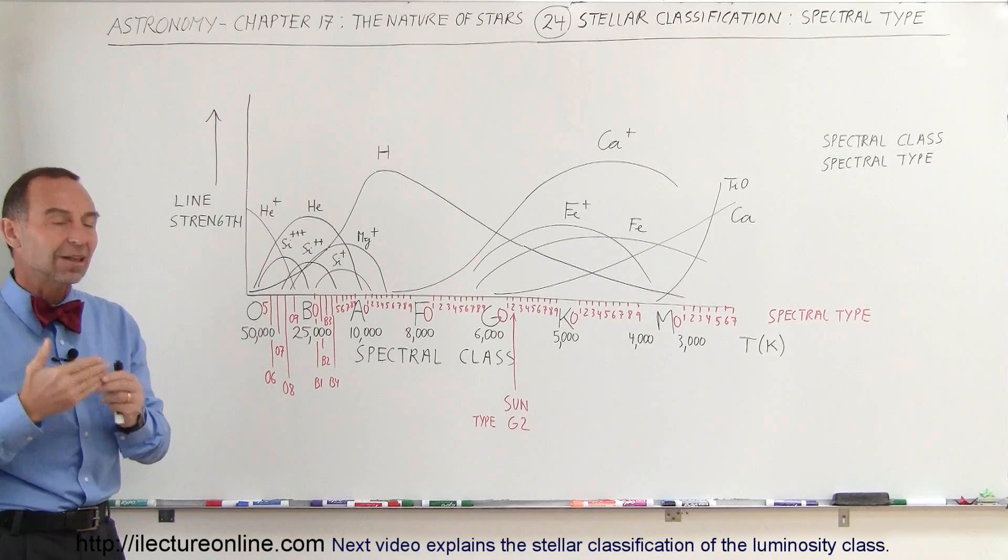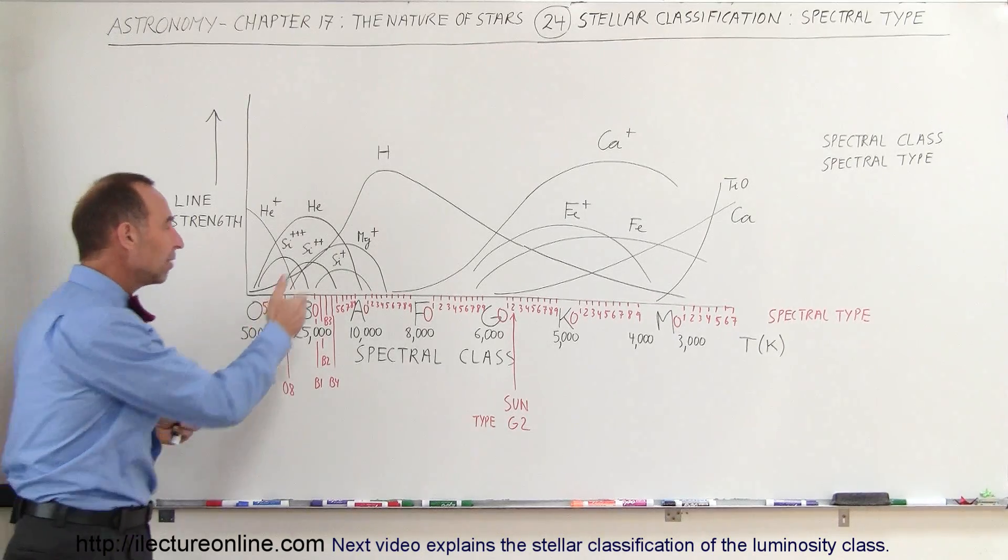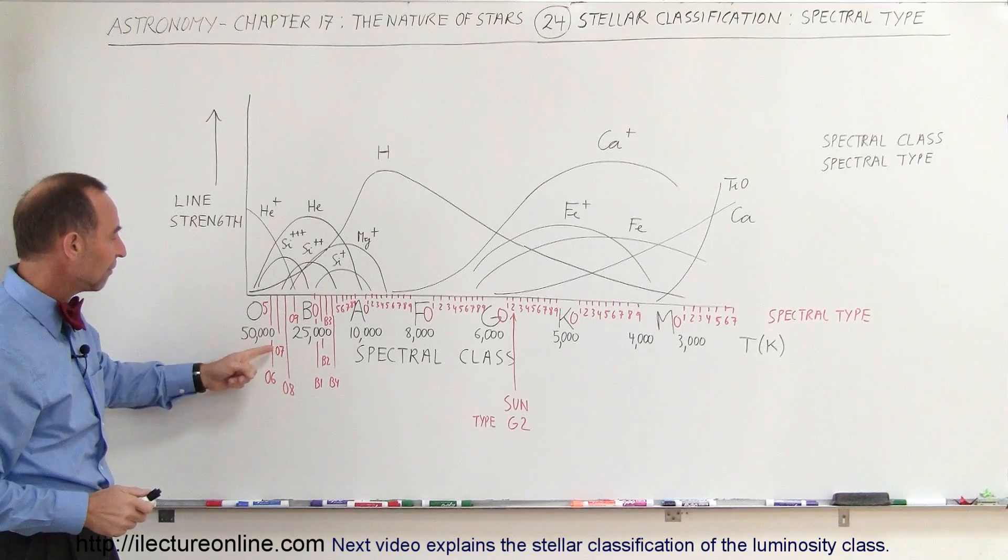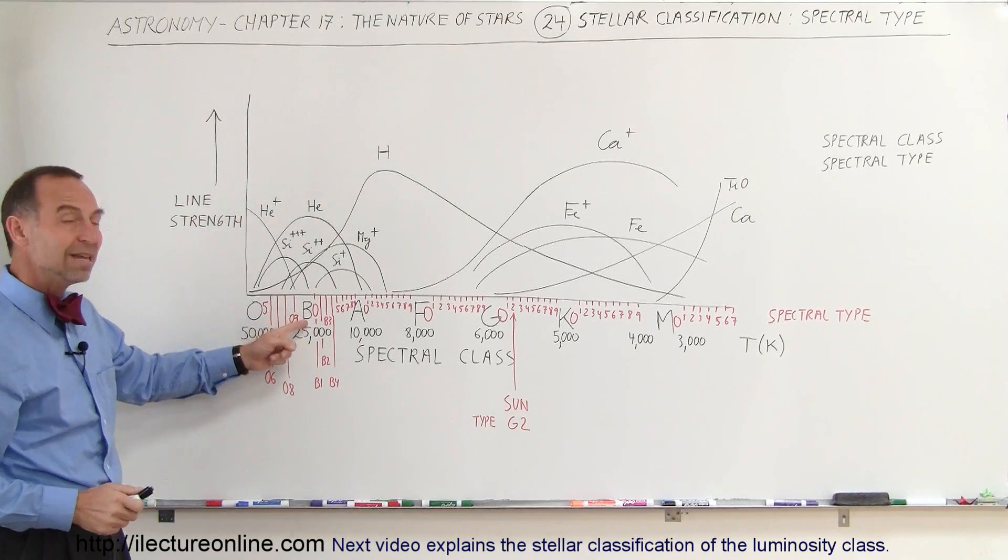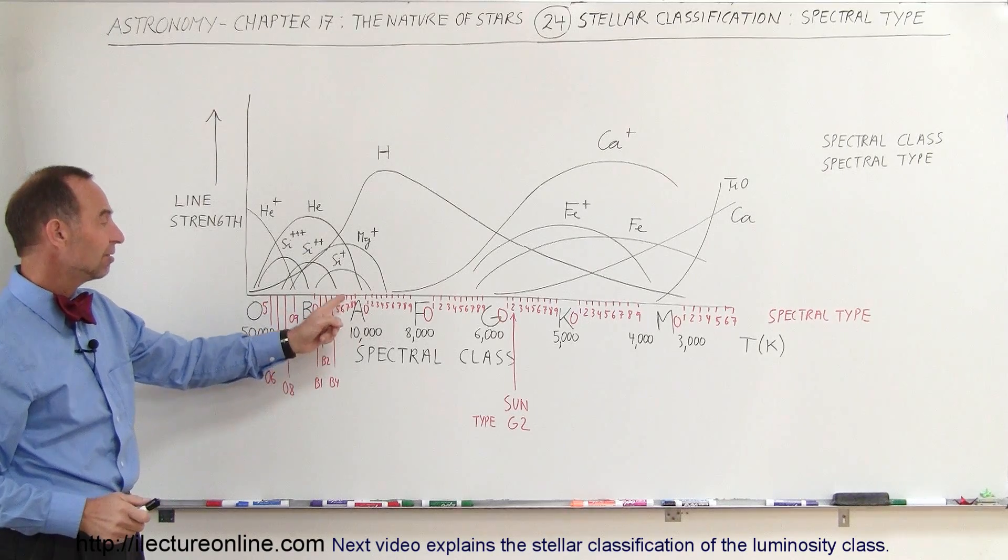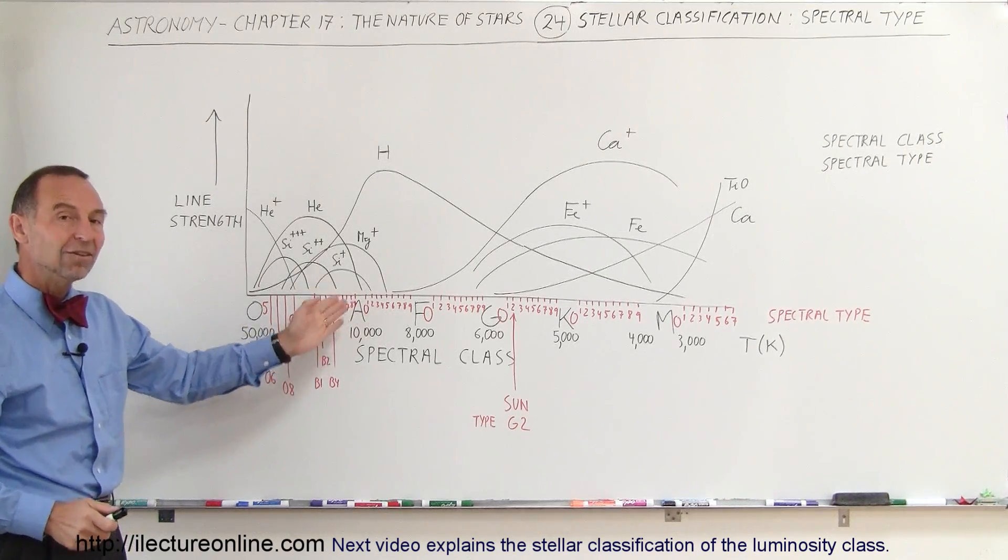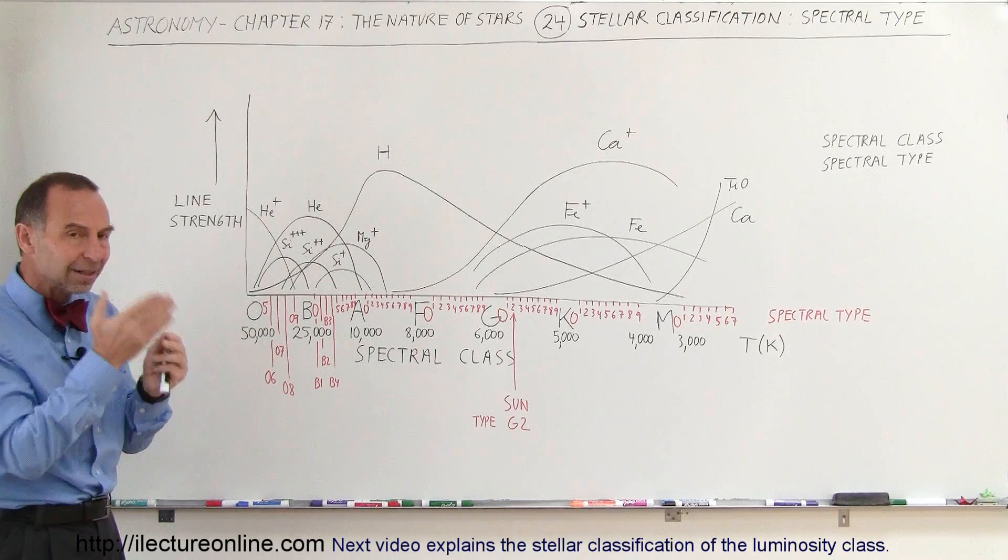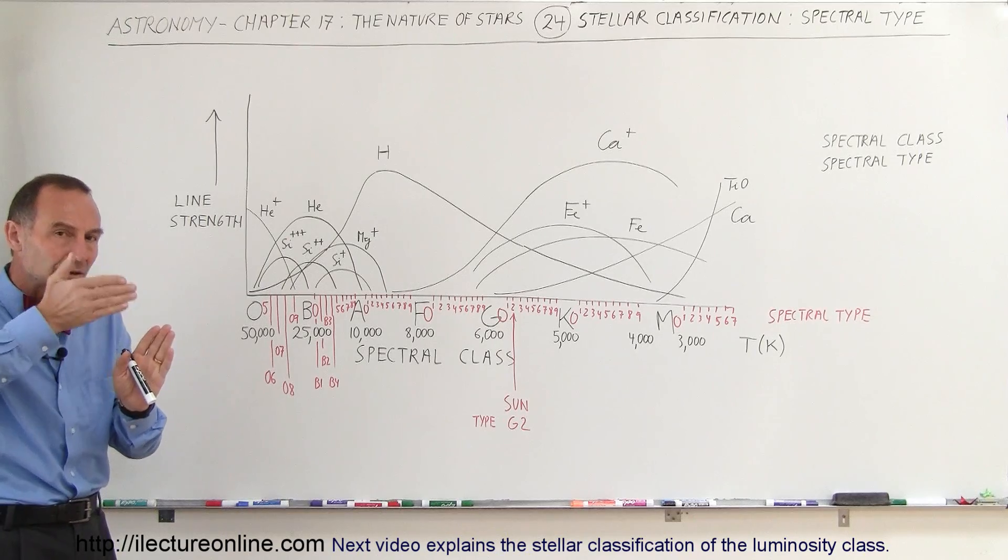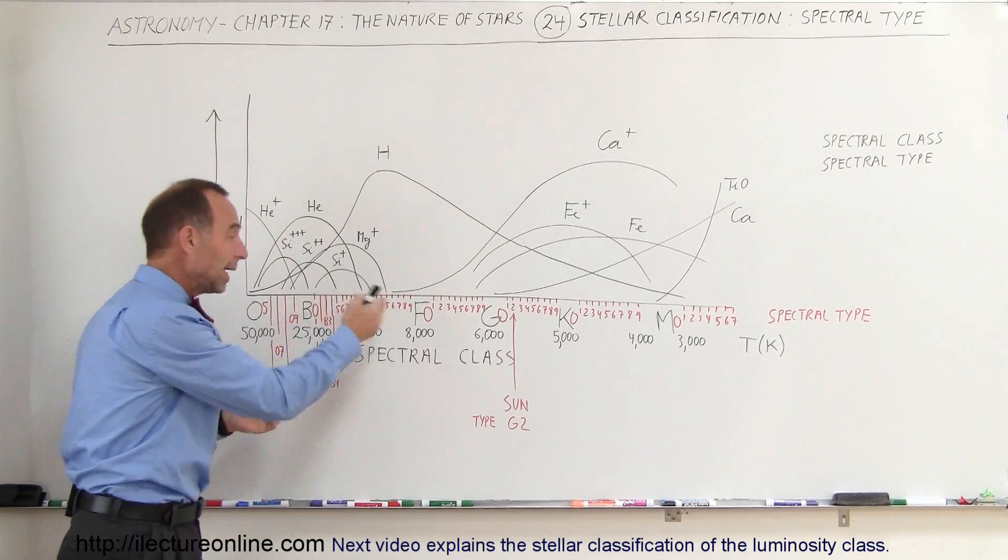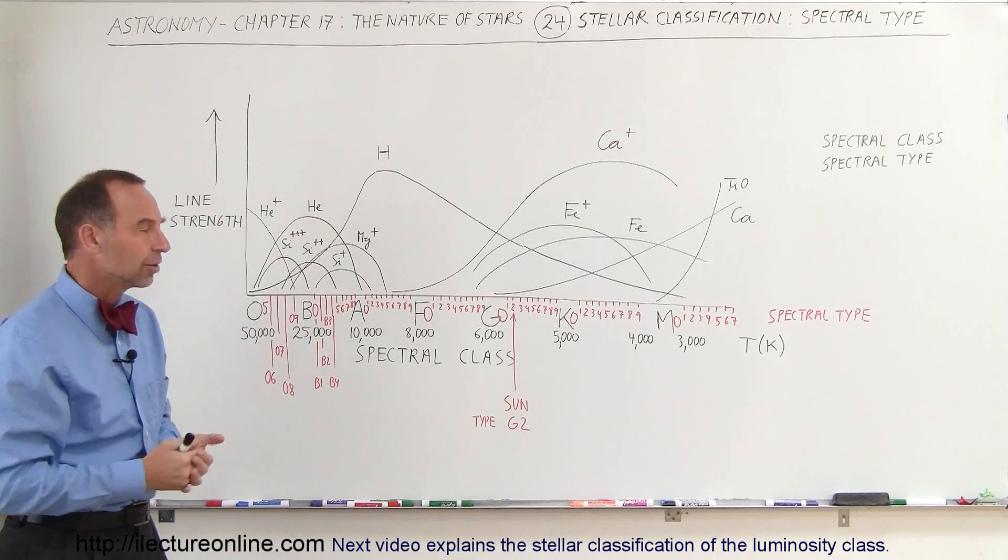And so we've subdivided the stellar classification by some numbers. Starting from O5, we go to O6, O7, O8, O9, to B0, B1, B2, B3, B4, B5, B6, B7, B8, B9, then to A0, and so forth. So we subdivided every stellar class in 10 gradual changes, each represented by a number starting from 0 through 9, and then we get to the next stellar class.